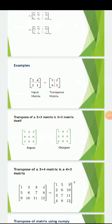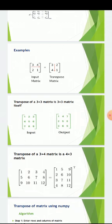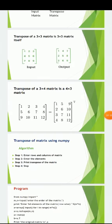We have several examples to show the transpose of a matrix. For a 2x2 matrix, if we interchange its rows and columns, we get a 2x2 matrix itself. Similarly for a 3x3 matrix, we obtain a 3x3 matrix. However, for a 3x4 matrix, if we interchange its rows and columns, we obtain a 4x3 matrix, which is the transpose.